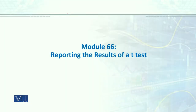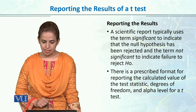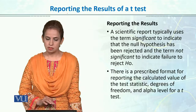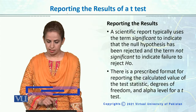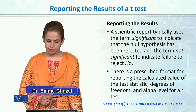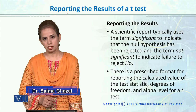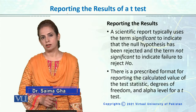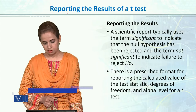We calculated the t-test. Now how will we report the t-statistic in our manuscript, in our papers or in our thesis? Reporting a t-test in the article or in your thesis: a scientific report typically uses the term 'significant' to indicate that the null hypothesis has been rejected, and the term 'not significant' to indicate failure to reject the null hypothesis.